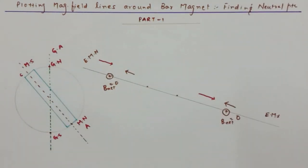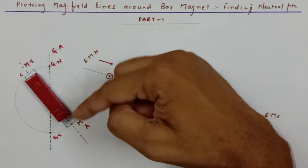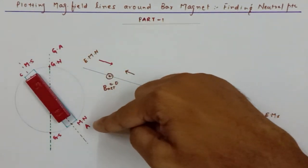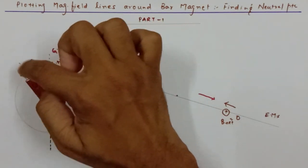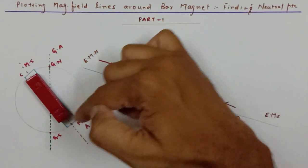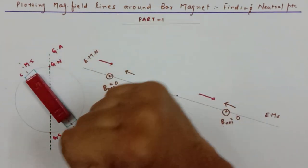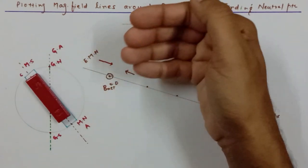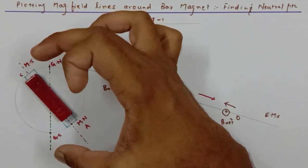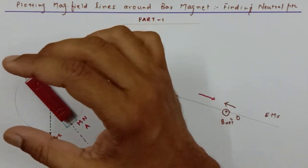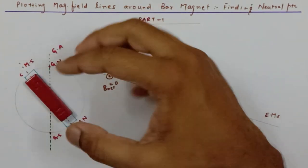If we consider the earth as a huge magnet, then the north pole of the earth's magnet is in Antarctica and the south pole is at Canada. So we call Canada the magnetic south and Antarctica the magnetic north, because the north pole of the huge bar magnet is actually on Antarctica. Its south pole is in Canada.